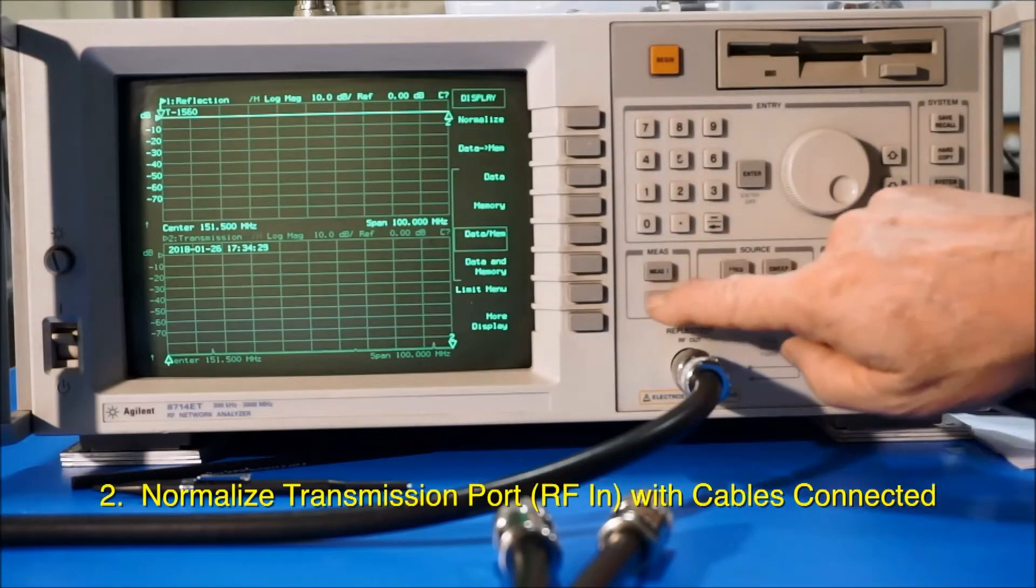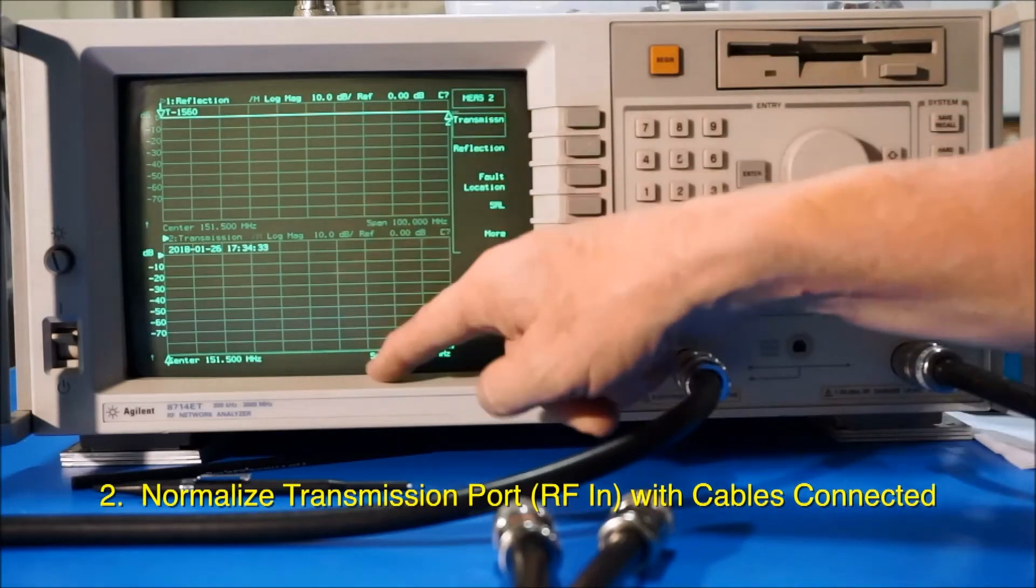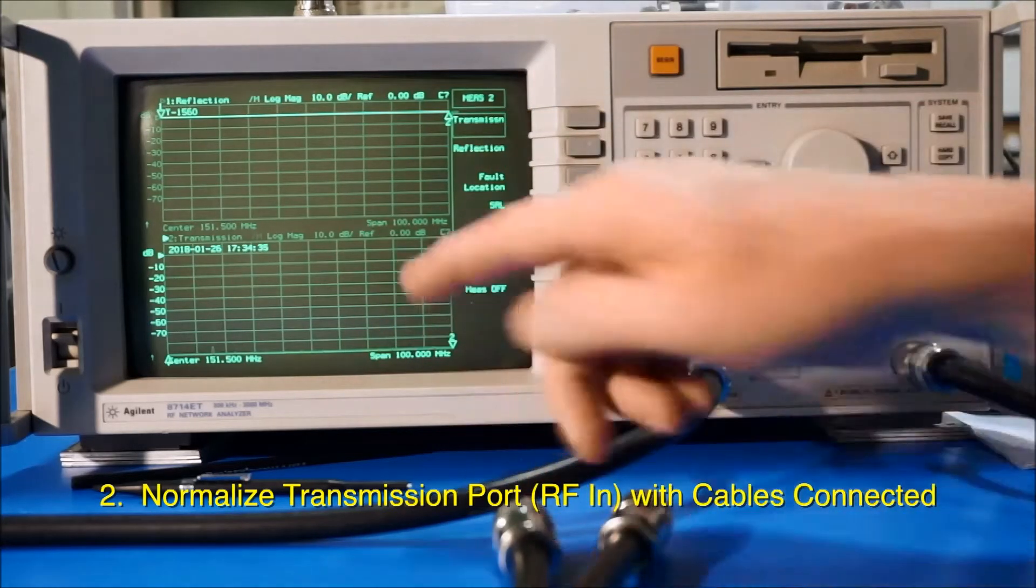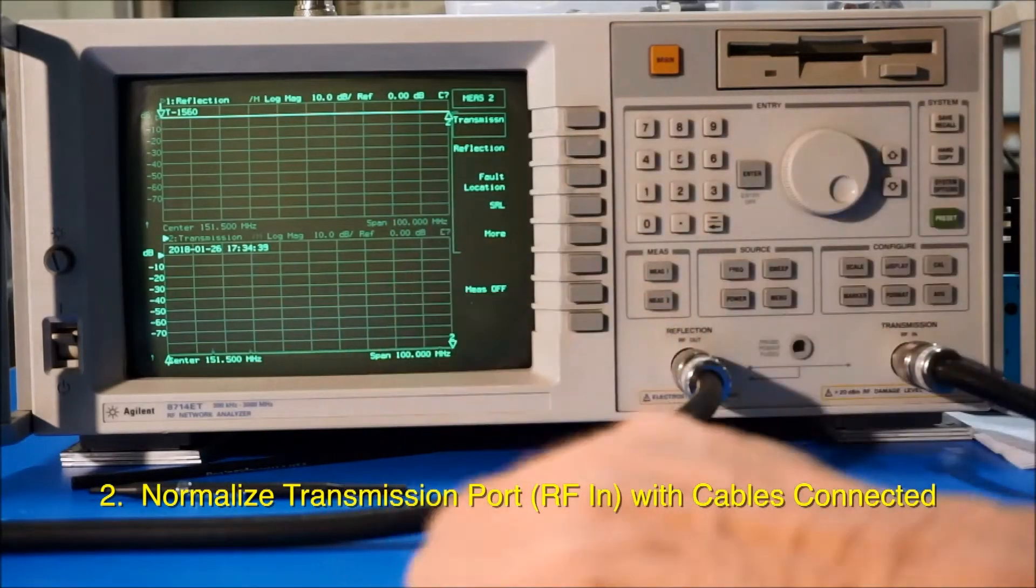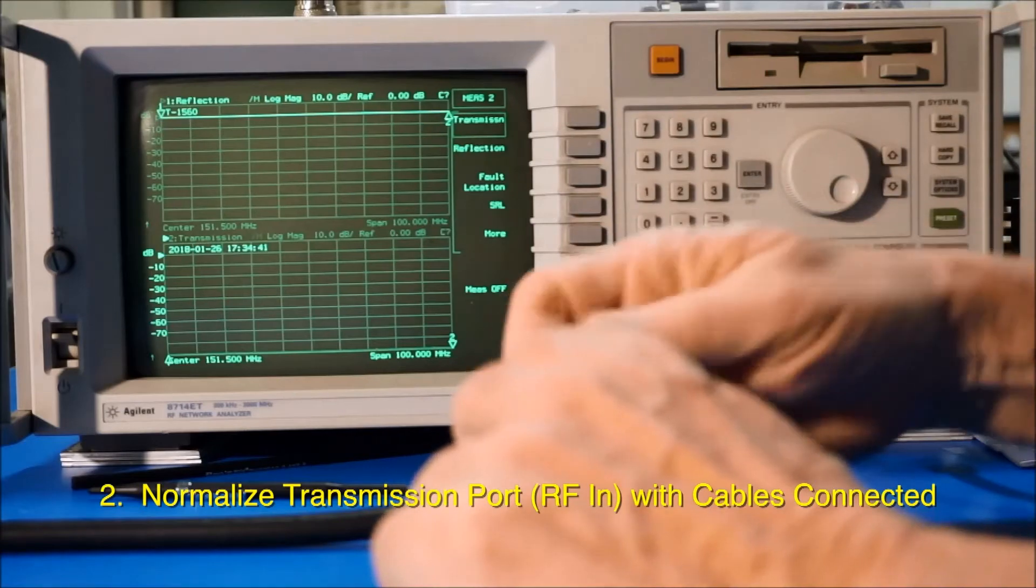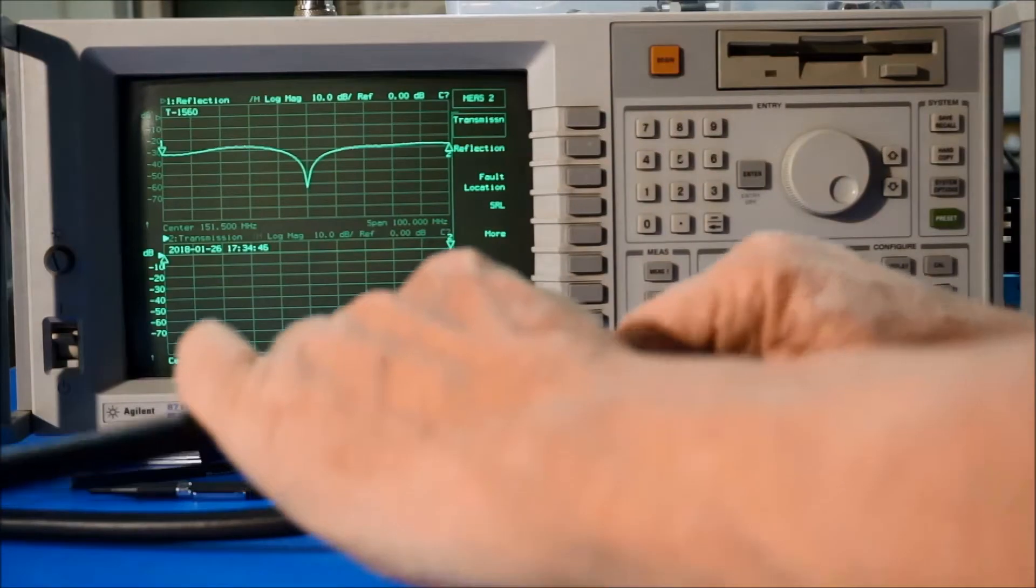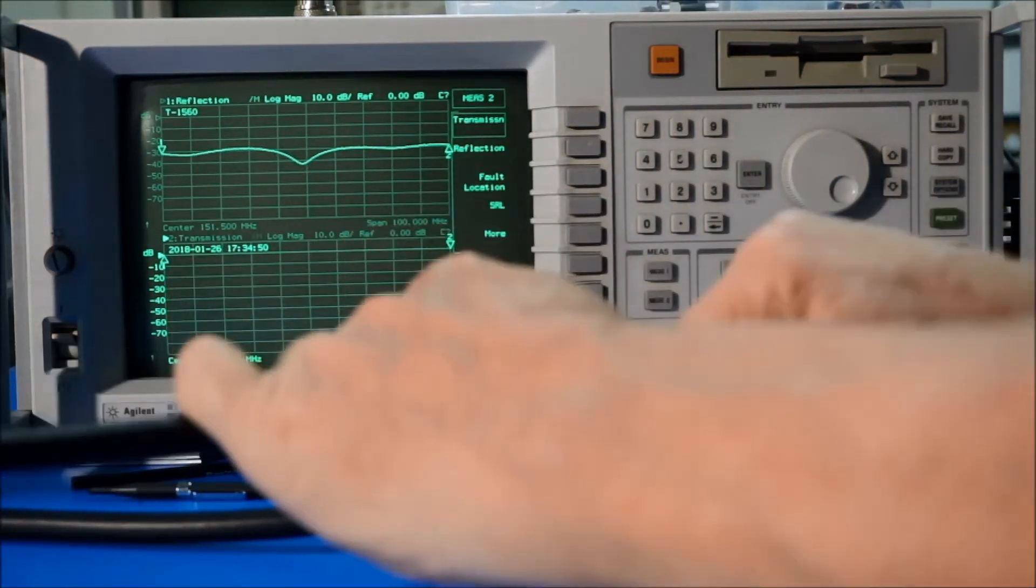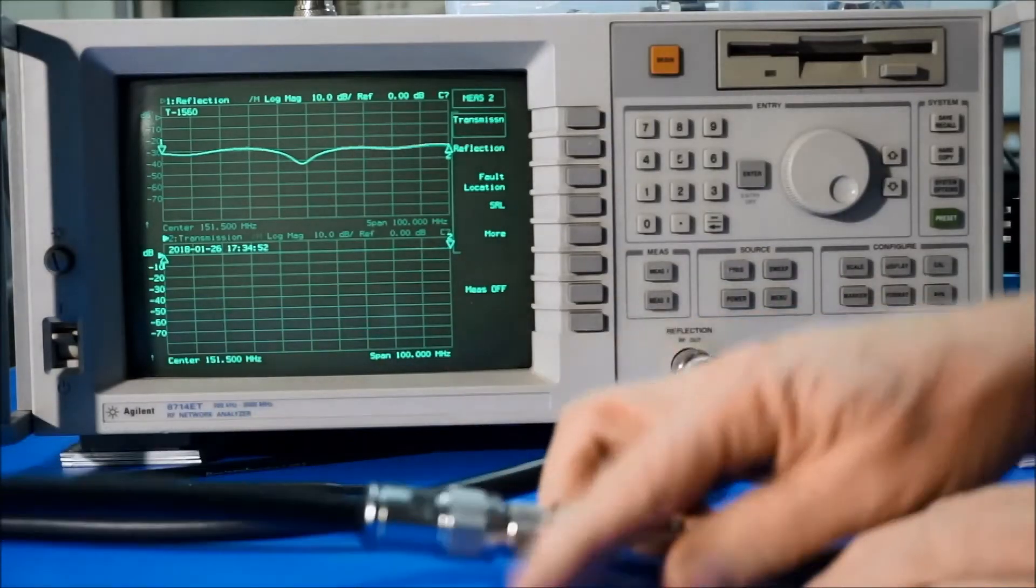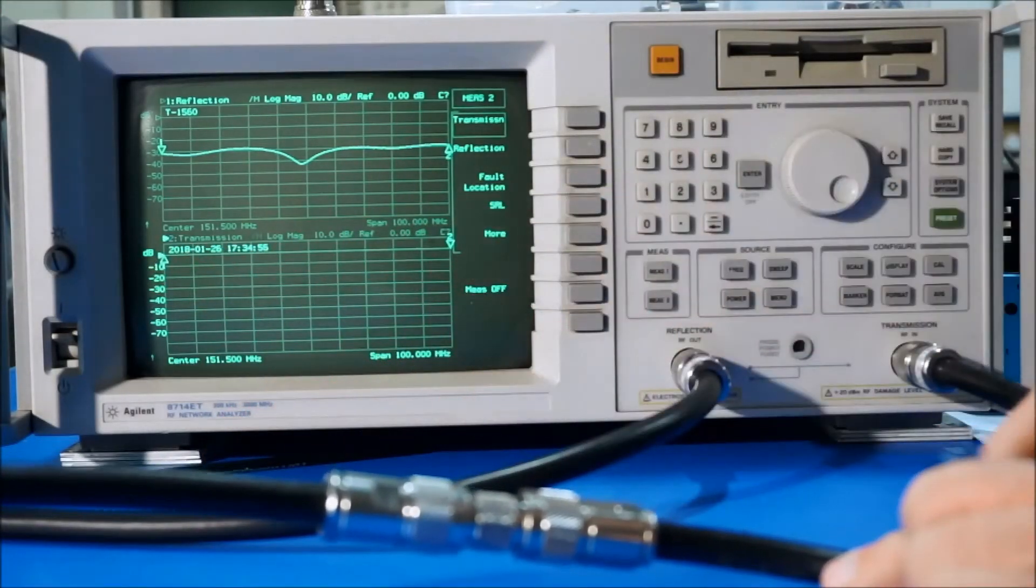Then I go to measure two, and it's on transmission. That's the trace down here. Right now it's down off the bottom because we have nothing connecting these two. Put these together, and you see that this line now has come up here at zero.